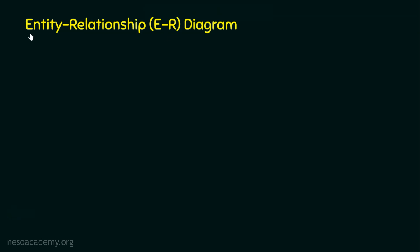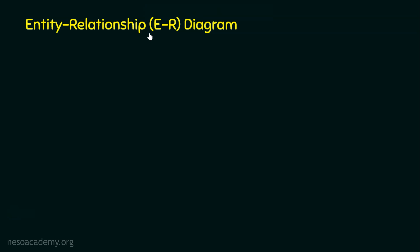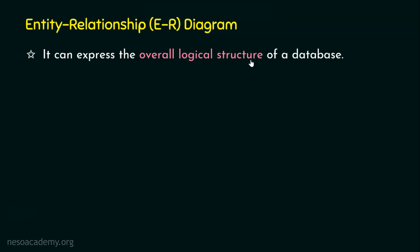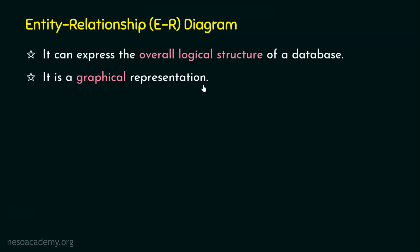The ER Diagram means Entity Relationship Diagram. We know what an entity is and how relationships are formed among entities. This diagram involves entities and the relationships among them, including the basic components of the ER Model: Entity Sets, Attributes, and Relationship Sets. The ER Diagram is used to express the overall logical structure of a database. The ER Model is a high-level data model, and this ER Diagram is its graphical representation — when the ER Model is portrayed as diagrams, they are represented as ER Diagrams.